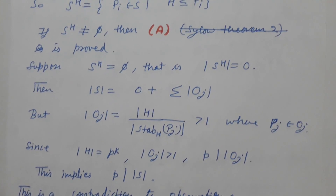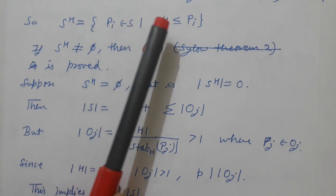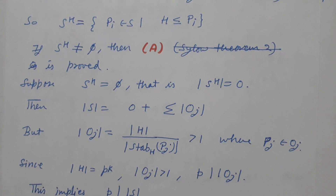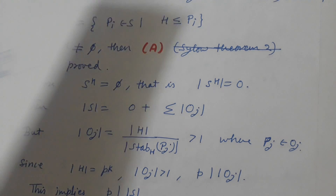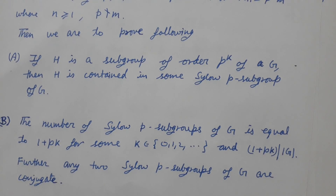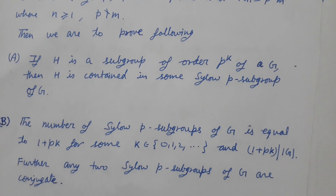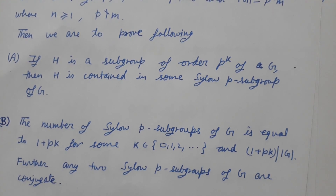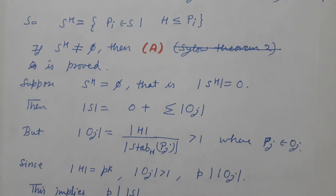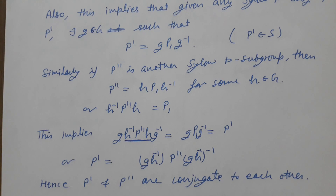Since S_H is non-empty, there exist Pi's in S which contain H. This is exactly what we wanted to prove in Sylow's second theorem: any subgroup H of order p^k in G is contained in some Sylow p-subgroup of G. So we have proved Sylow's second theorem.